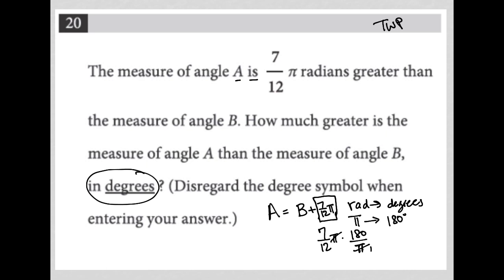Now I can simplify this. I know that 12 goes into itself once, 12 goes into 180 15 times, and then all I have left is 7 times 15. 7 times 15 equals 105.